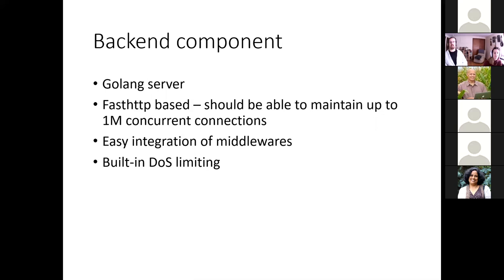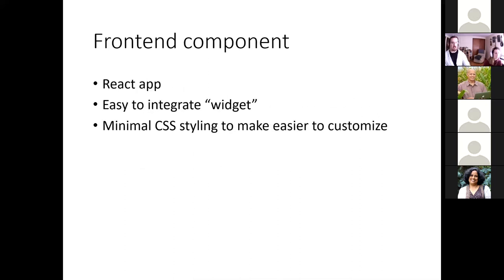The back end was based on a package called fasthttp — a native language server that handles plenty of concurrent connections, has very low system overhead, and makes it easy to insert middleware such as logging or authentication. On the front end, since civet was already written with React, it was straightforward to integrate more React components. The CSS was kept fairly generic and simple so that anyone wanting to customize it to fit their site could do so relatively easily.